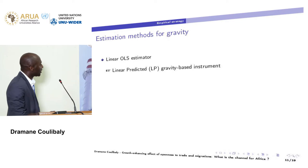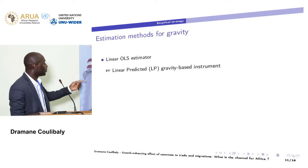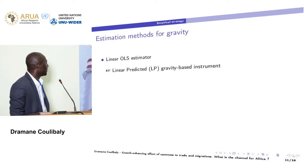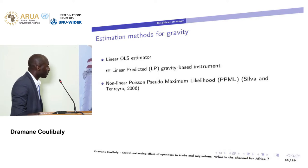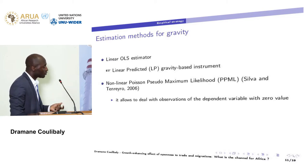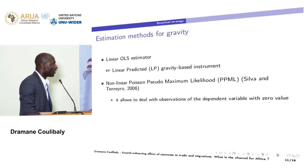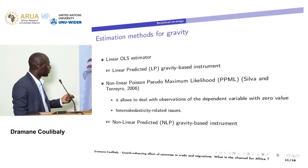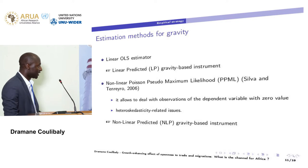Regarding the estimation method of the gravity regression, we use two methods. The first is a linear OLS estimator, which we call the linear production instrument. The second is the non-linear Poisson maximum likelihood estimator proposed by Silva and Tenreyro (2006). This method has two advantages: it allows dealing with observations of the dependent variable with zero values, and it accounts for heteroscedasticity in the gravity regression. We call it the non-linear production instrument.